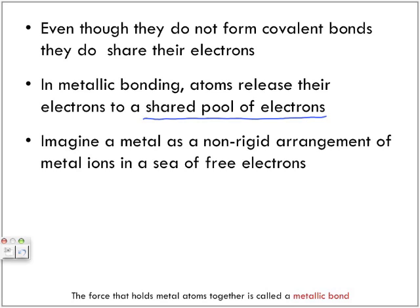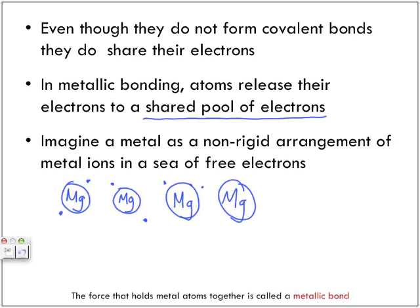The shared pool of electrons. So what we have is magnesium. How many valence electrons are there? Two. So what they are, they're just pretty much, we have magnesium, and they can be anywhere around them. So even though they do not form covalent bonds, they do share their electrons, but they share them in this pool of electrons.